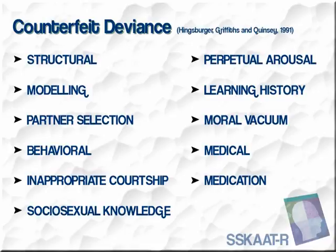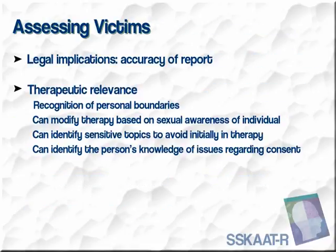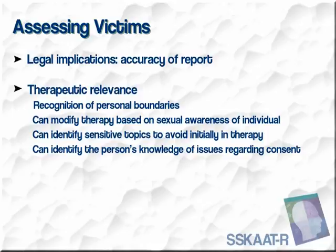There are many other reasons that can explain why a person with an intellectual disability may act in an inappropriate sexual way. We suggest that you may want to refer to that article when doing an evaluation on an offender. Why should we assess the sexual knowledge and attitudes of victims? There may be some legal implications that have to do with the accuracy of the report, but mostly it's for therapeutic relevance. Does the individual understand and recognize personal boundaries? It allows us to modify therapy based upon the sexual awareness of the individual, to identify sensitive topics to avoid initially in therapy, and to identify the person's knowledge of issues regarding consent.